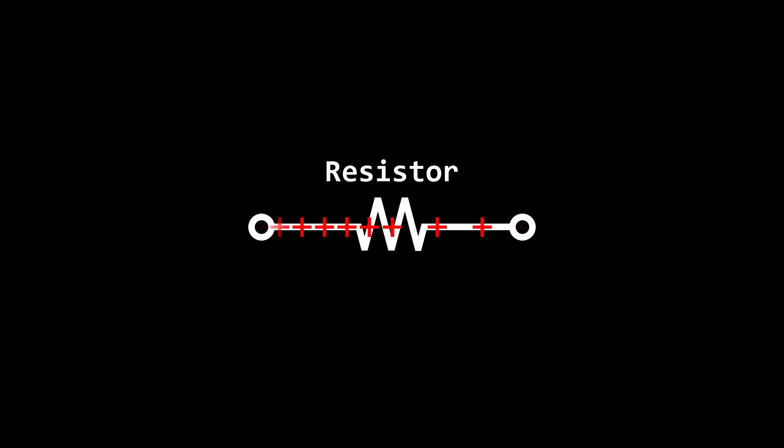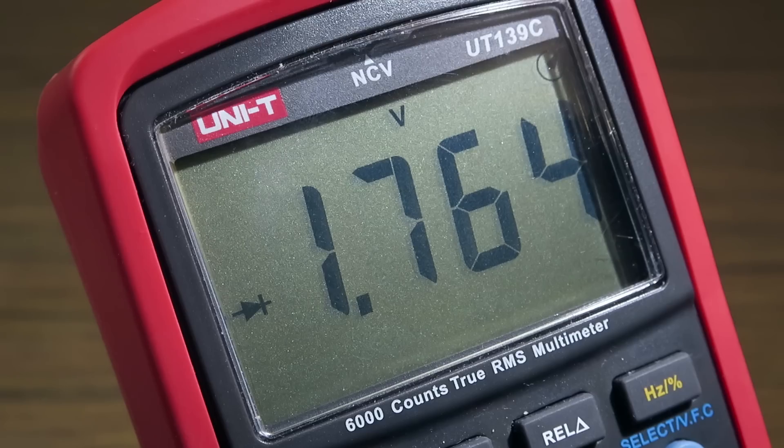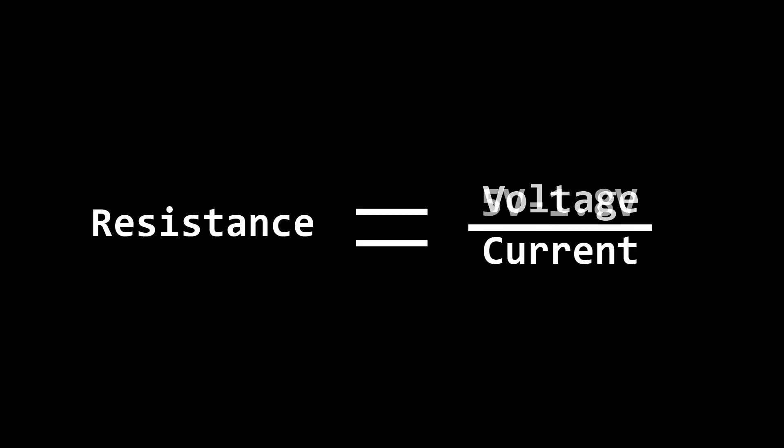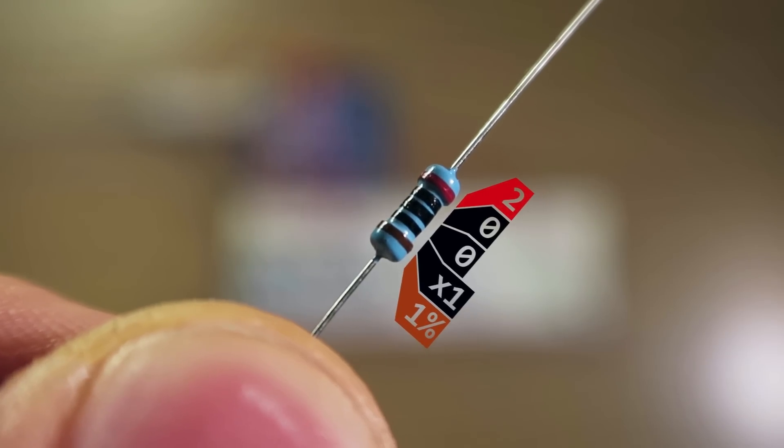A resistor will limit the flow of current to a safe level for the Arduino and LED. To calculate the value of this resistor, we need to know the voltage drop across the LED, which can be found by measuring it with a multimeter. Once we know the voltage drop, we can calculate the value of the resistor using Ohm's law. The maximum current for an LED like this is around 20 milliamps, so I'll use that in the calculation. 160 ohms is not a value I have, so I'll use 200 ohms instead.